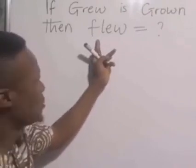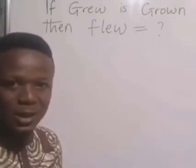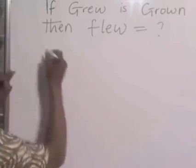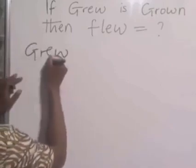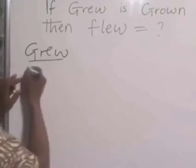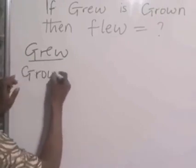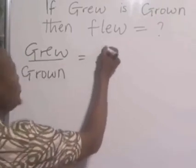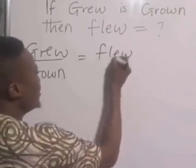Then flew, which is a past tense. If we want to get the past participle, look at what the mathematical will do. Grew all over grown is equal to flew all over.